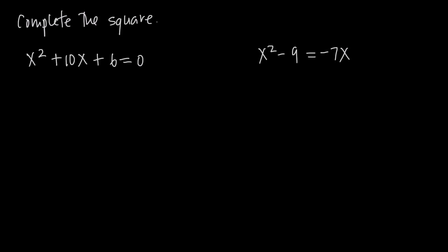When we complete the square, we essentially create a perfect square on the left-hand side so we can take the square root to solve for x. We follow the same process every time, and it will always work as long as we have a trinomial on the left equal to 0 on the right.